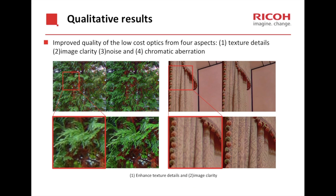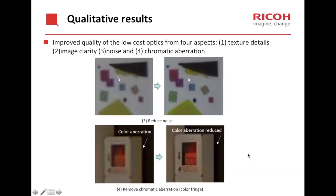Now we will show some qualitative results. We show how the image quality of low-cost optics can be improved by our method from four aspects: texture details, image clarity, noise, and chromatic aberration. The left column shows the original image and the right column shows the enhanced one. We can see that the texture details and image clarity improved greatly. The noise in the left image is significantly reduced in the right image, and the color fringing in the left image is also removed in the right image.